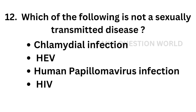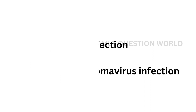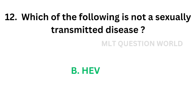Question number 12: Which of the following is not a sexually transmitted disease? Option A, chlamydial infection; option B, hepatitis E virus infection; option C, human papilloma virus infection; option D, HIV. The correct answer is option B, hepatitis E virus. Hepatitis E virus is transmitted through contaminated food and water.